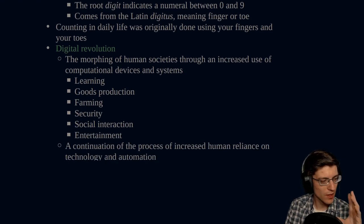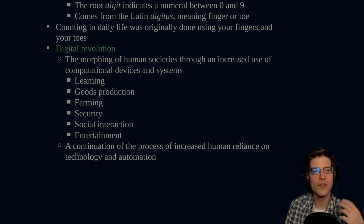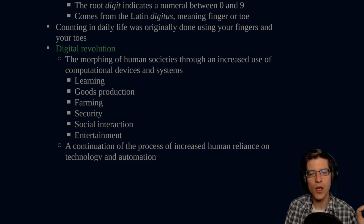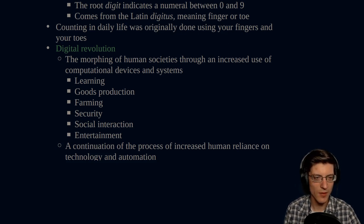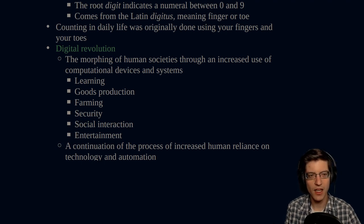Now from this, from the idea that we can store information digitally, we then have the idea of a digital revolution. What is the digital revolution? It's the morphing of human societies through an increased use of computational devices and systems. So electronics send, store, and receive information digitally. What areas of human society are touched by computational devices? This is just the briefest of lists, and each of these lists can then be further fractionalized and made even finer grained.